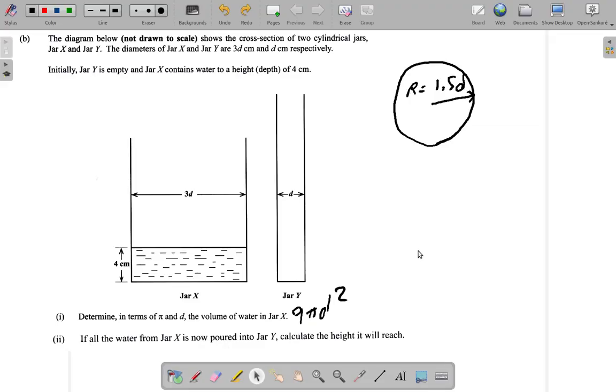Now we're going to look at question 6b2. Earlier we found that the volume of water in jar x was 9πd².